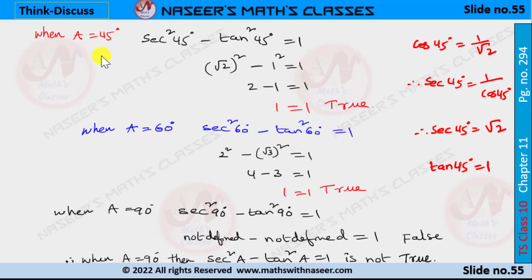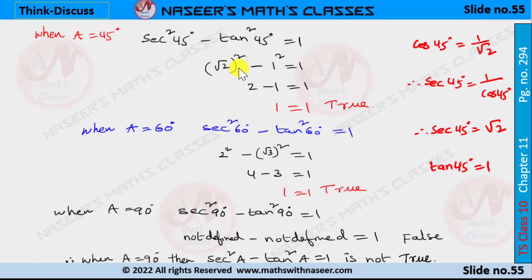When a = 45°, the identity sec²45° − tan²45° = 1. We know cos45° = 1/√2, so sec45° = √2 and tan45° = 1. Substituting: (√2)² − 1² = 1. Since (√2)² = 2, we get 2 − 1 = 1, therefore 1 = 1. This is true.